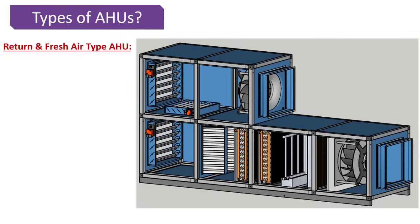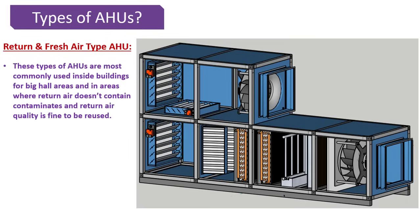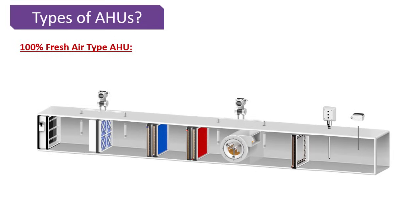Now let's look at different types of AHUs. The AHU we just discussed is a return and fresh air type AHU. This type is most commonly used inside buildings for big hall areas and in areas where the return air does not contain contaminants and return air quality is fine to be reused.